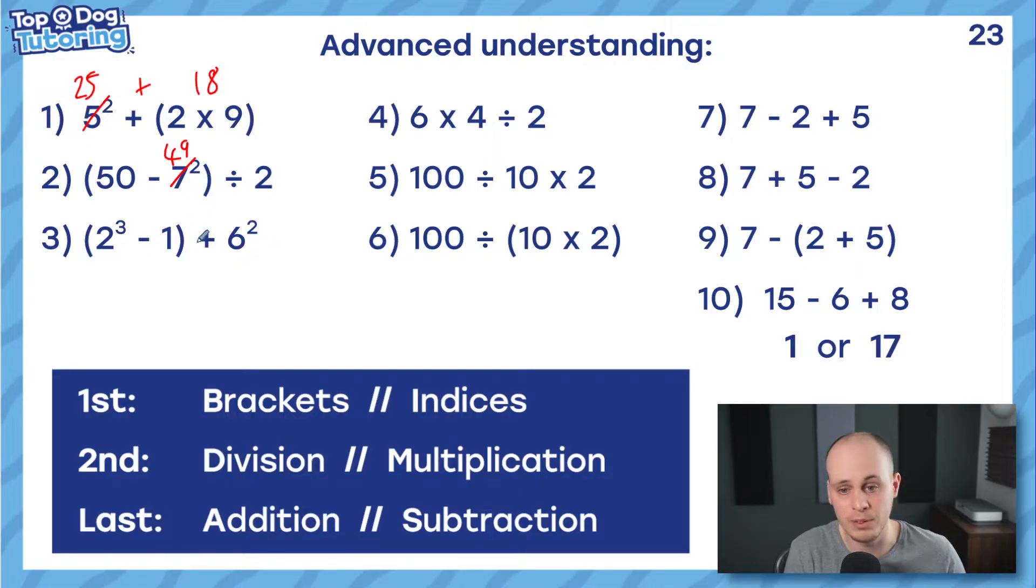50 take away 7 squared, which is 49. I'm going to have to do those first. So, there was no real order between indices and brackets there. And again, just to make it really clear, I've put them all in the last one. I've got 2 cubed take away 1 in brackets, so some indices here. And I've got plus 6 squared, some indices there. Does it really matter if I turn that into 36 now or after I've done the brackets? Not really. So, the point I'm trying to make here is that brackets and indices, they're the most important, highest priority thing to do. You must focus on them first if they're in the equation.